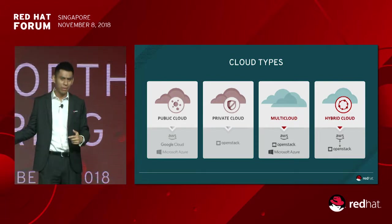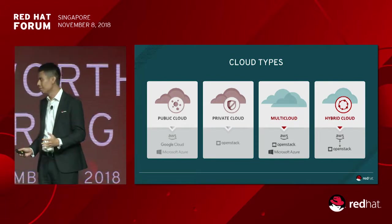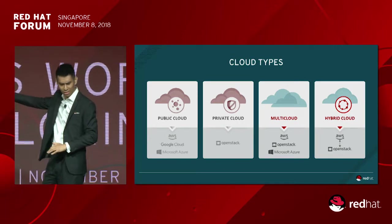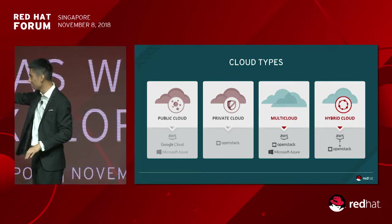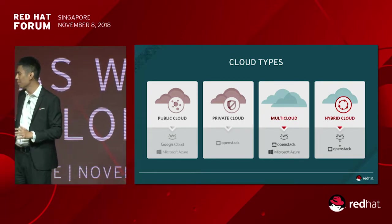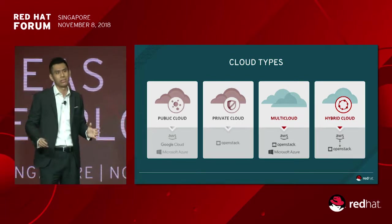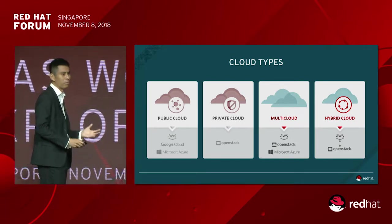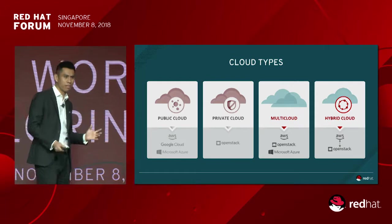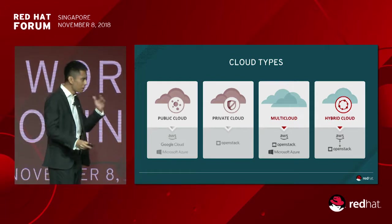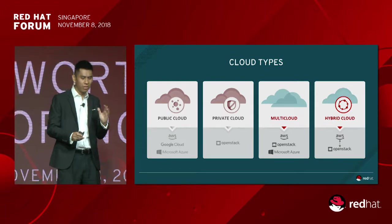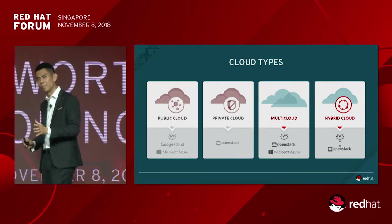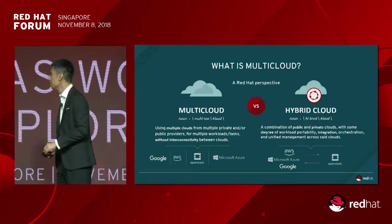We talked a little bit about hybrid cloud. What is hybrid cloud? You see in that diagram on the right-hand side, you have OpenStack and you have AWS. Whether it's AWS or Azure, it doesn't really matter, but some sort of integration between them is what we term as hybrid cloud.